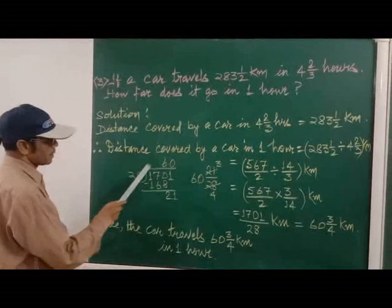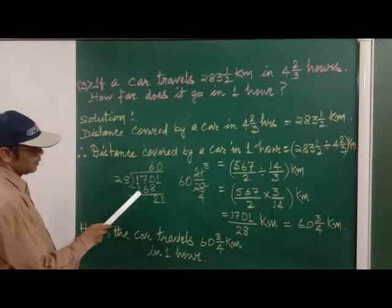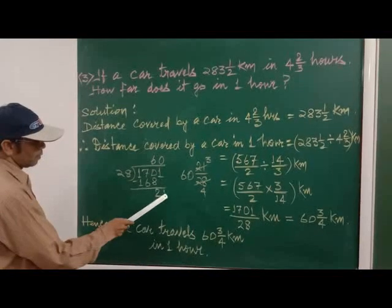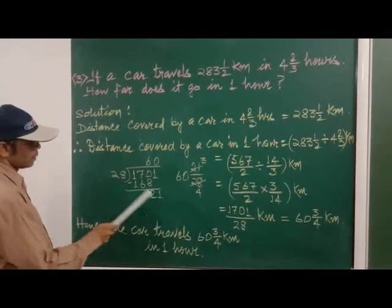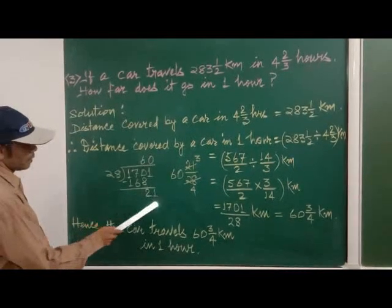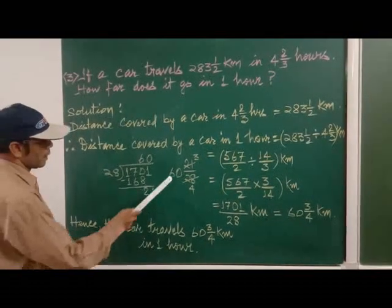So I have shown here. So 28, 6 are 168. If you subtract it, you will get 2 and 1 will come down. Since this is 28 and this is 21. So 28, 0 here, 0. So 21 will be the remainder. So you have to write like this.